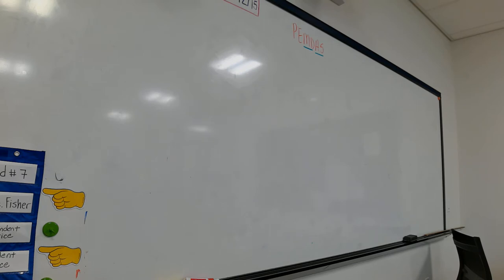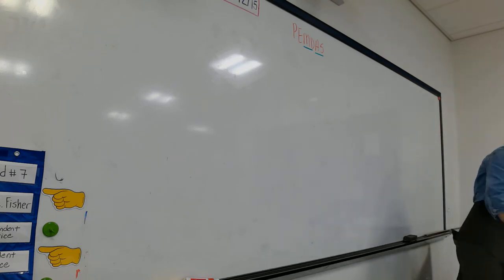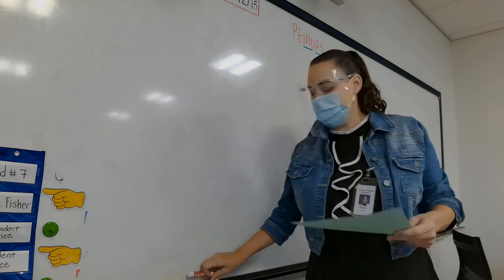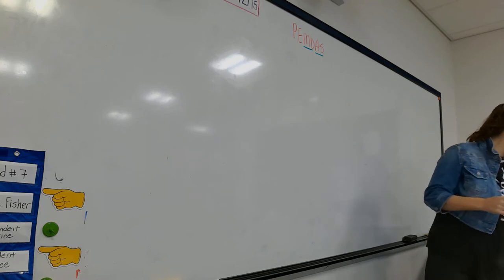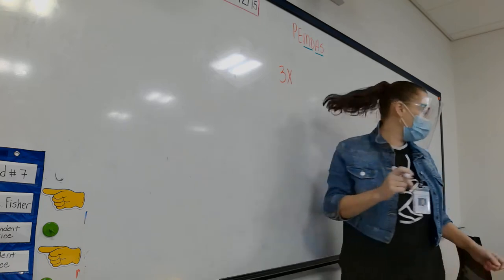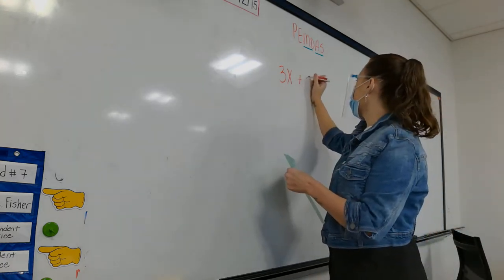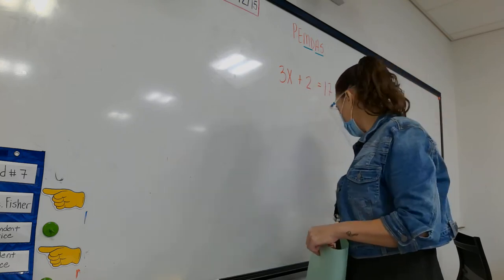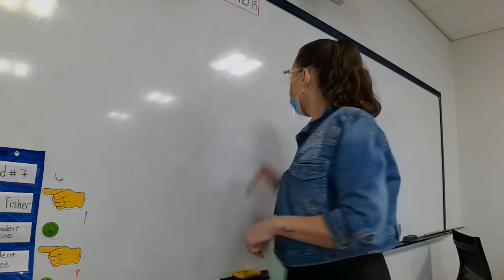I just handed you the worksheet for solving two-step equations. I will go over the notes and then we will do some practice. So I'm going to give an example on the board: 3x plus 2 equals 17. Today we are doing solving two-step equations.